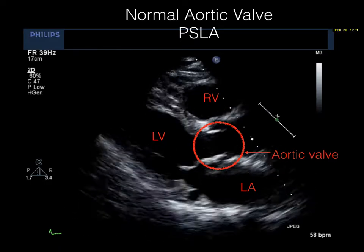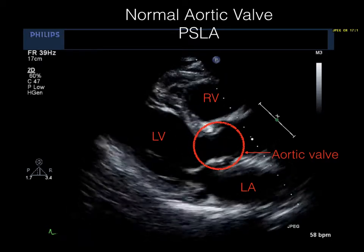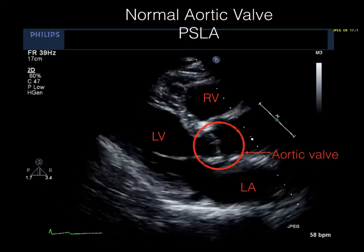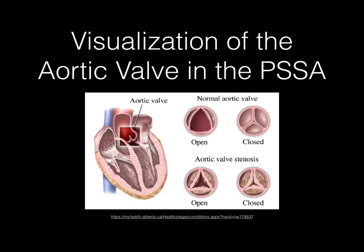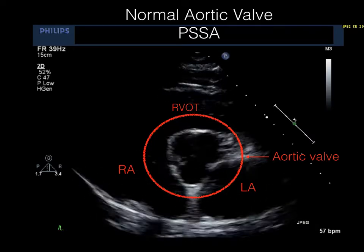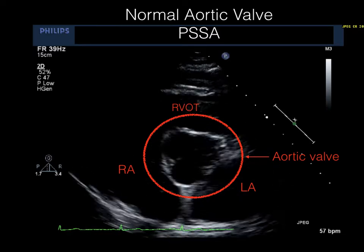Here we see a parasternal long axis view showing the aortic valve cusp movements. We can also look at the valve itself, a thin white line — this aortic valve is normal. In the parasternal short axis view, the aortic valve will look like a circular echoic structure where you will see the movement of the cusps opening and closing. To visualize the aortic valve in the parasternal short axis, you will need to tilt the probe just a bit towards the patient's chest wall. This is a parasternal short axis view showing the opening and closing of the aortic valve with normal cusp movements.